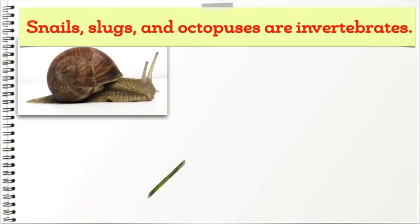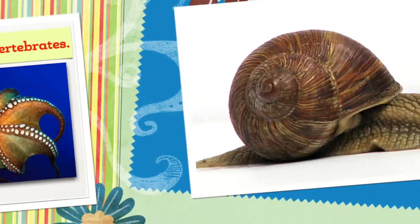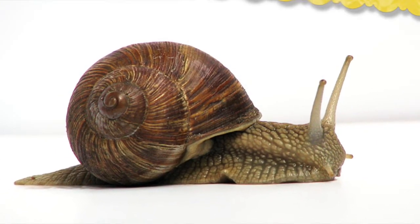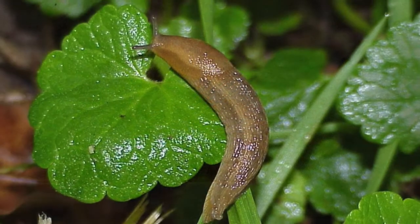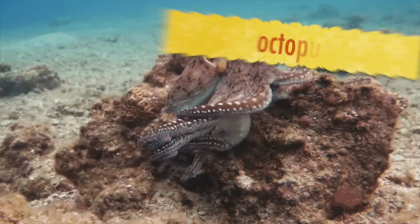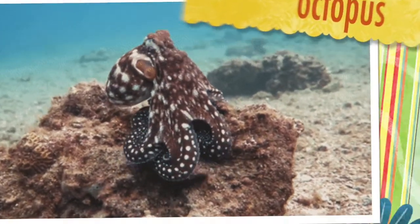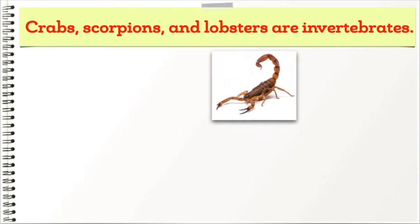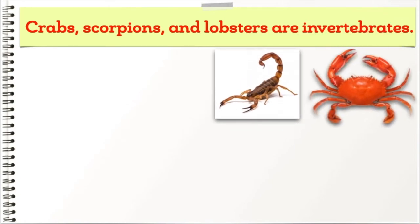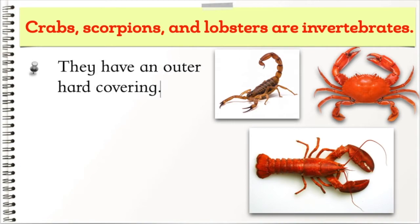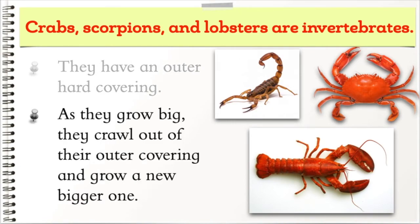Snails, slugs, and octopuses are also invertebrates. Crabs, scorpions, and lobsters are invertebrates too. They have an outer hard covering. As they grow bigger, they crawl out of their outer covering and grow a new, bigger one.